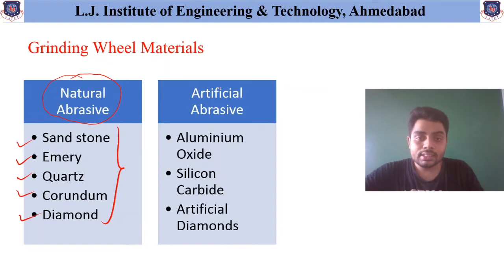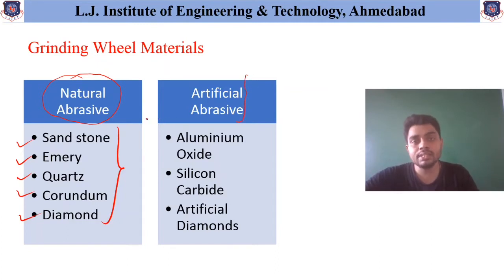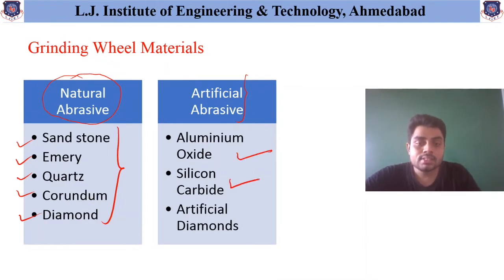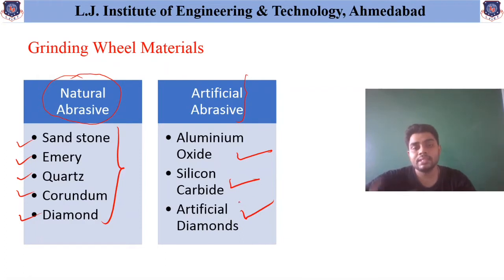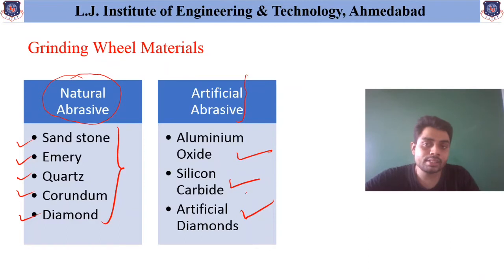Similarly, other artificial abrasives are also available which can be used for practical purposes. They are aluminum oxide, silicon carbide, and artificially made diamonds. So these are the different types of material used as abrasive wheel material.